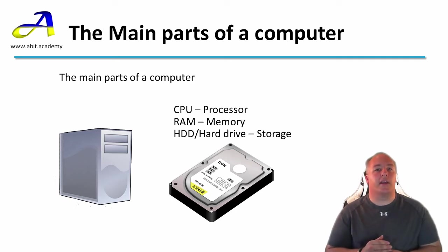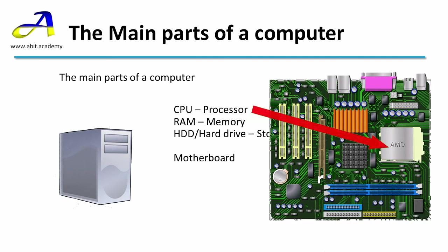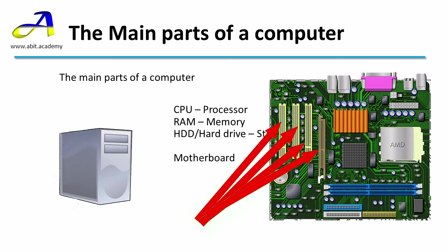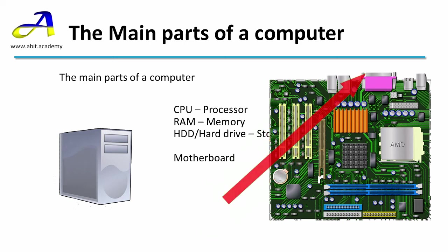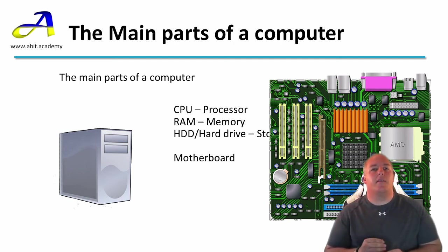The last component we are going to look at here ties everything else together. It is called a motherboard and is used to connect all the other components together. Here is a diagram of a motherboard — here is where the CPU goes, here is where the RAM goes, and these connectors are used to connect up the hard drive. These other slots are used to add additional cards, such as graphics cards for visual output or a sound card for audio. Sometimes motherboards have this functionality built in, but you can still add cards with better performance, for example to support multiple monitors.